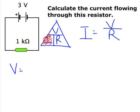Now the circuit diagram gives us some values for V and R. We're told that V is 3 volts, and R is 1 kilohm.